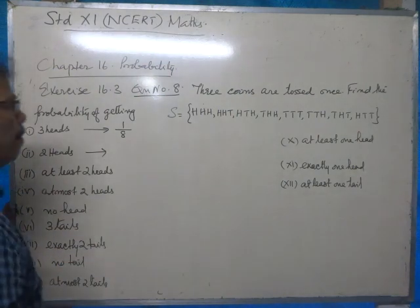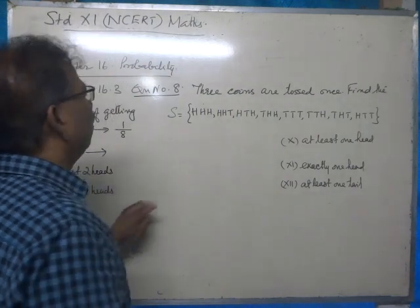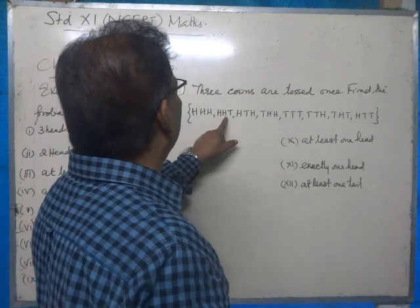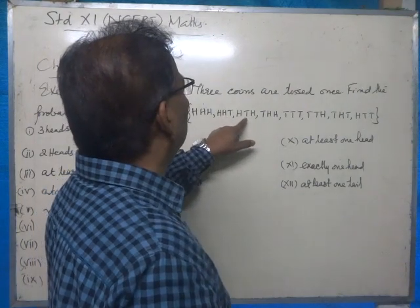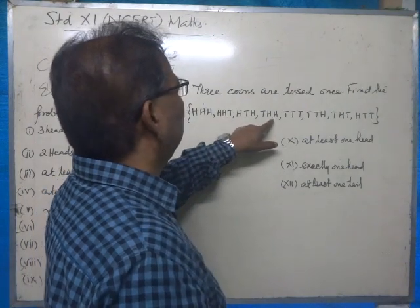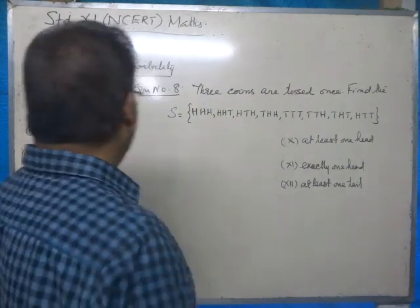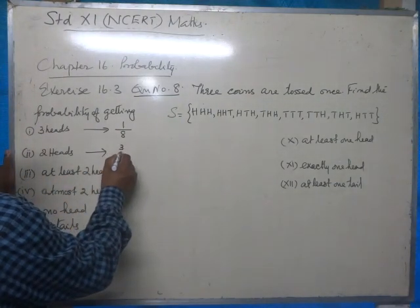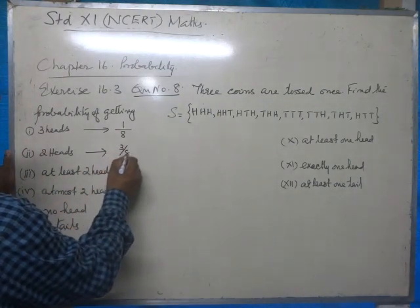The second part asks for the probability of getting two heads. We can see there are three outcomes with two heads — one, two, three. Therefore the answer is three by eight.